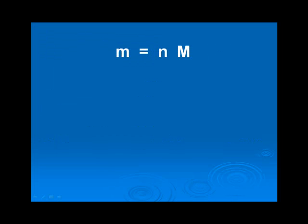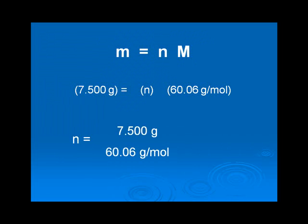Plugging in these values, 7.500 grams and 60.06 grams per mole, we can solve for n, or number of moles. n equals 7.500 grams divided by 60.06 grams per mole, which equals 0.1249 moles.